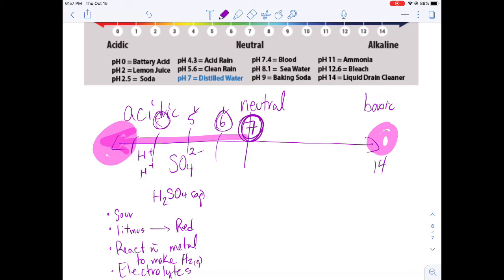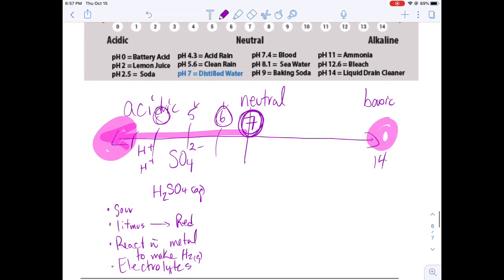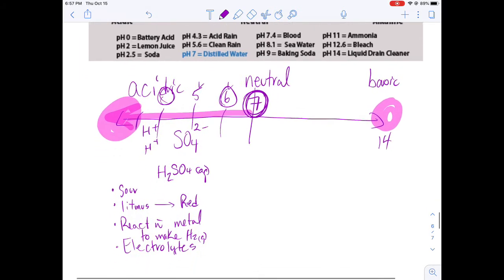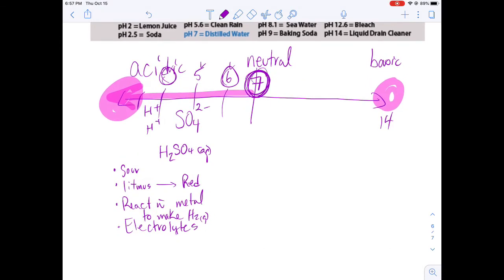Bases conduct electricity in solution, but bases are different. Bases have a pH greater than 7, and the pH could be as high as or higher than 14. Bases are bitter, turn litmus blue, and are electrolytes. Typically, bases do not react with metals to make hydrogen gas.